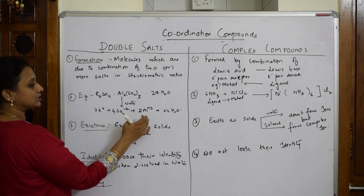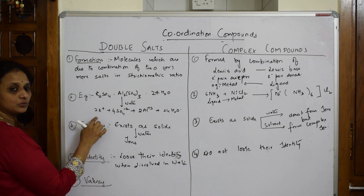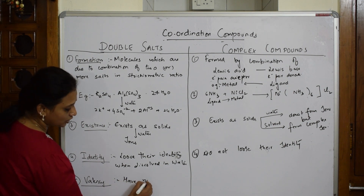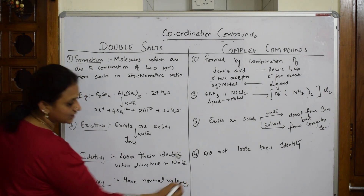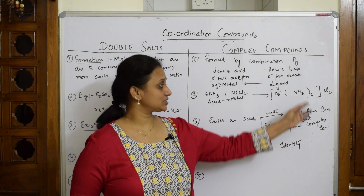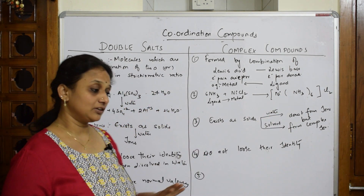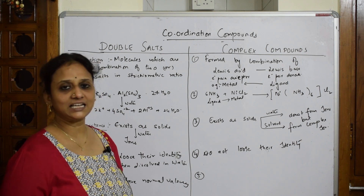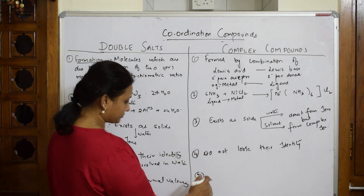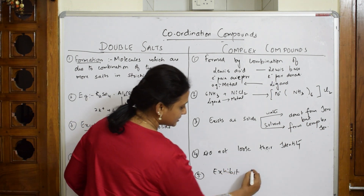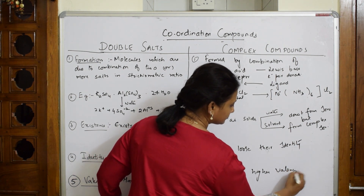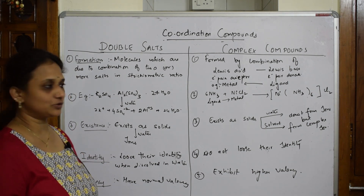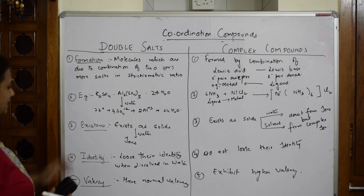Regarding valency: in double salts, the elements show normal valency — aluminum is +3, potassium is +1, as expected. In complex compounds, when you calculate the charge, the metal exhibits a higher valency compared to its normal valency. I'll be showing you how to calculate the oxidation state. Try to underline the subheadings like this when writing your answer.